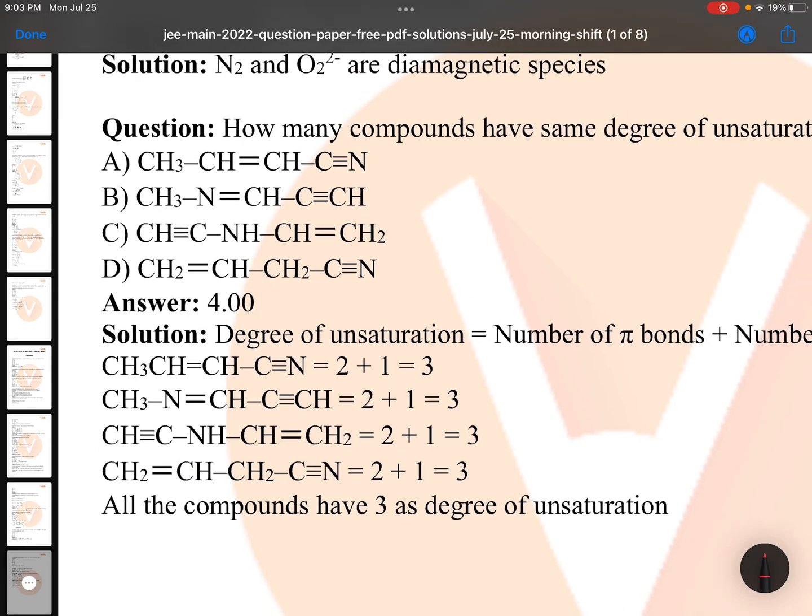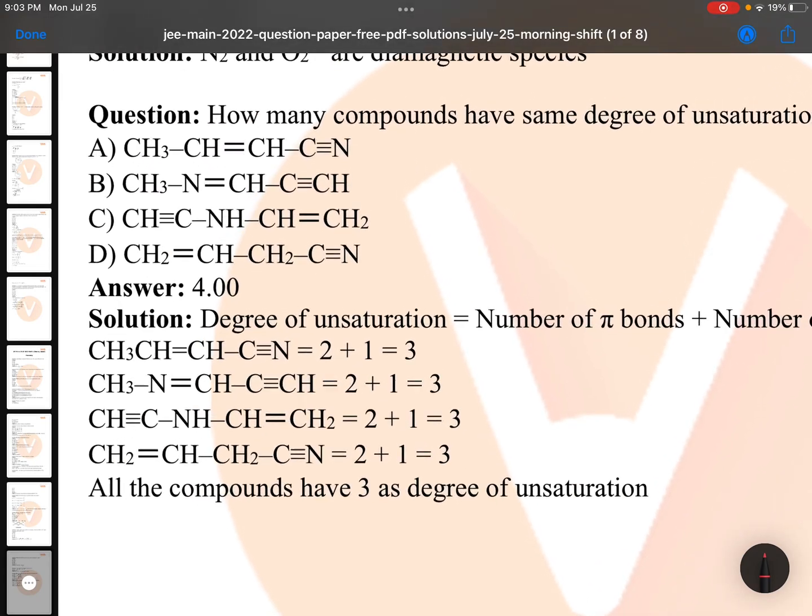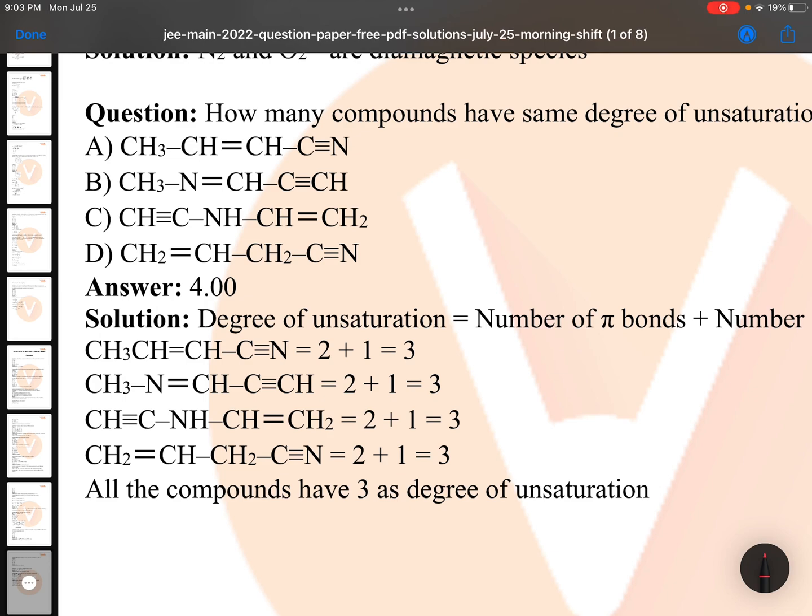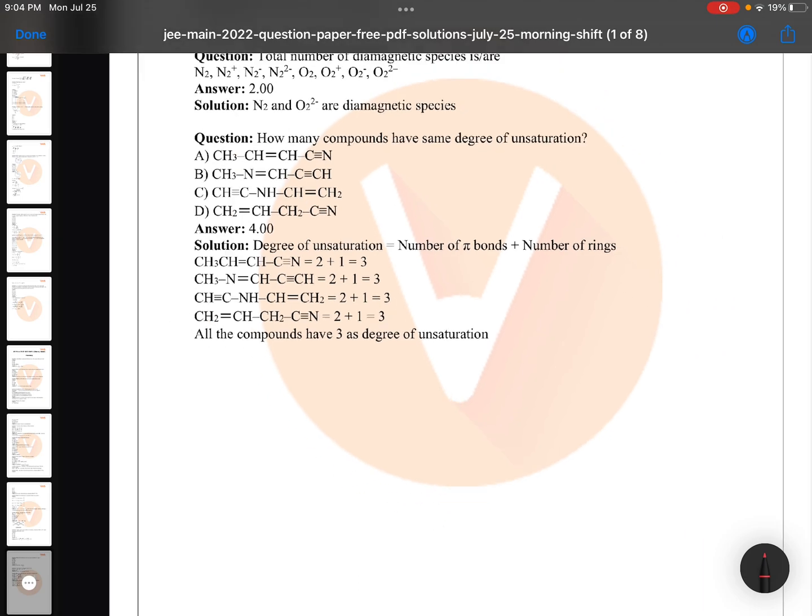How many compounds have same degree of unsaturation? Here you see, first option contains one double bond, one triple bond, so degree of unsaturation 3. Second compound has one double, one triple, degree of unsaturation 3. Third one is having one triple, one double bond again same, and in case of D also same. So all they have same degree of unsaturation.